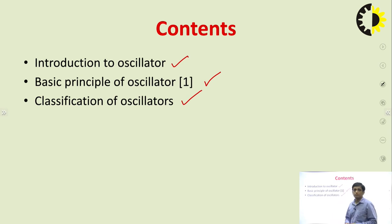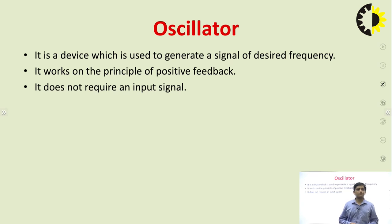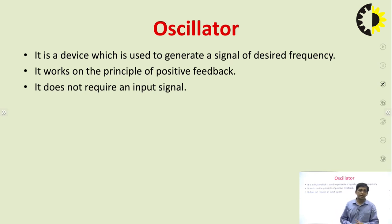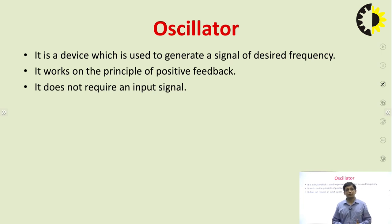This oscillator works on the principle of positive feedback. Feedback is of two types: positive feedback and negative feedback. Negative feedback is used in amplifiers because we need stability — we need a stable amplifier. But oscillators utilize positive feedback.